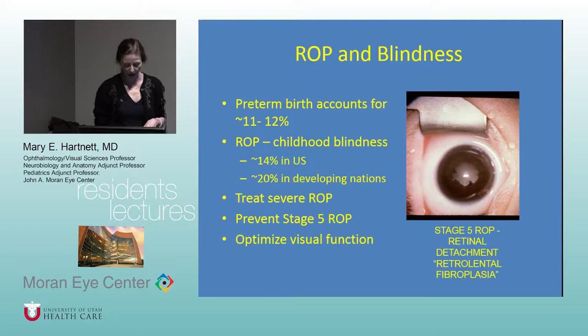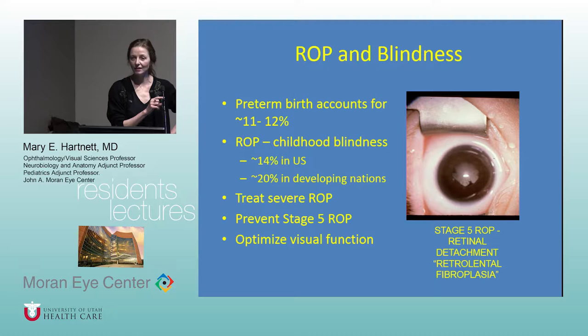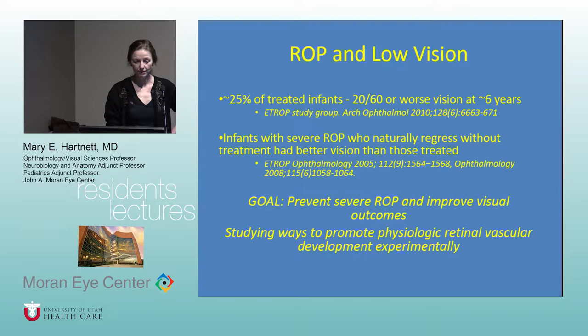We've really gone from preventing stage 5 ROP to looking at ways to prevent severe ROP and optimize visual function. Stage 5 ROP looks like a cataract but it's actually a scar behind the lens — the lens is clear and there's a total retinal detachment. That's what we want to prevent from happening.